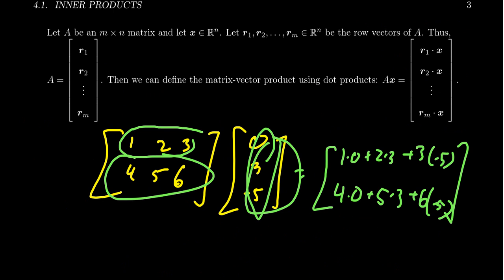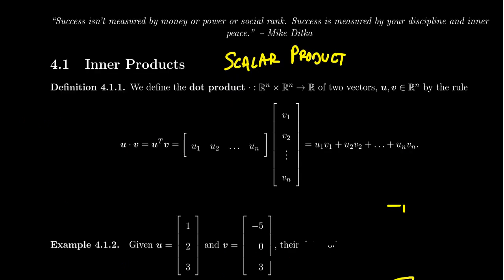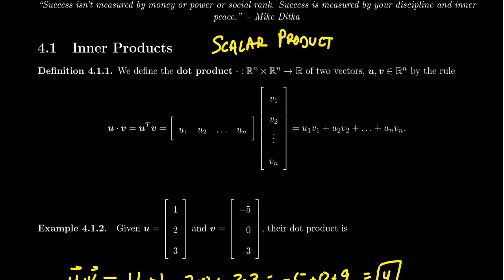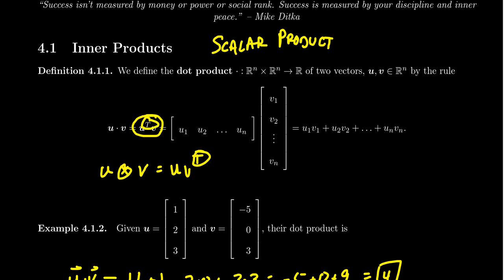Before closing, why is it called the inner product? It's in contrast to the outer product, which we'll define in a future lecture. The inner product produces a scalar — it goes into the field. The outer product produces a matrix. A nice mnemonic: the inner product is U transpose V — the T is on the inside. The outer product is UV transpose — the T is on the outside. If the T is on the inside, it's an inner product; if the T is on the outside, it's an outer product. We'll see the outer product later in this chapter.